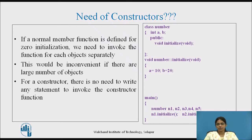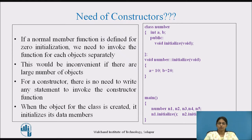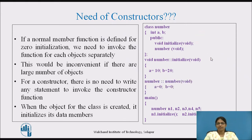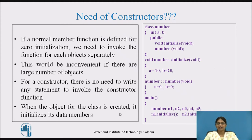So for that, we use a constructor. For a constructor, there is no need to write any statement to invoke the constructor function. When the objects for the class are created, it automatically initializes the data members. There is no need to call the function separately using an object and the dot operator — that is the main advantage of using a constructor. Here you can see the constructor 'number' has been declared and defined, initializing A and B to 0. When objects are created, the constructors are invoked automatically and the values of A and B are initialized to 0 for all objects.